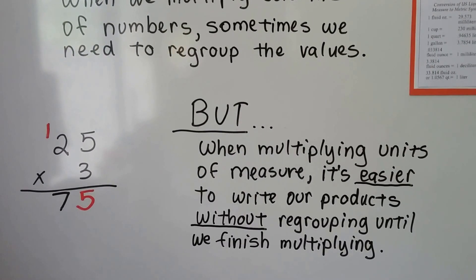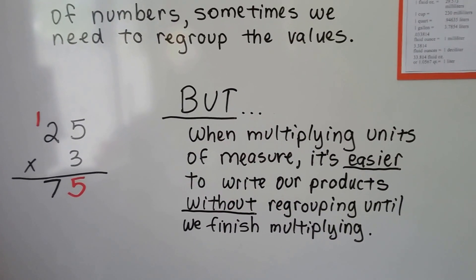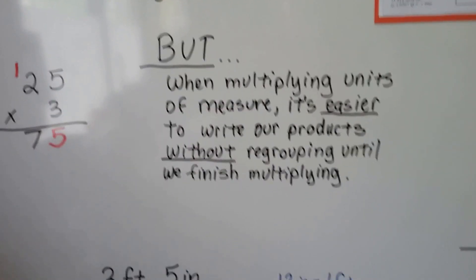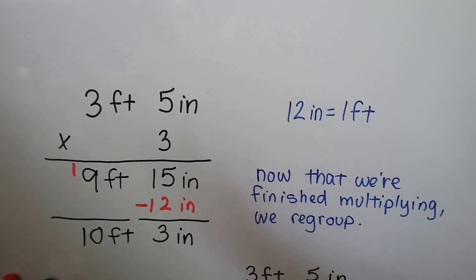But when multiplying units of measure, it's easier to write our products without regrouping until we finish multiplying. Let me show you. So we're going to multiply this, but we're not going to regroup until the end.